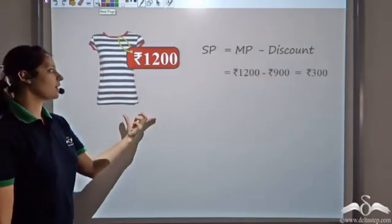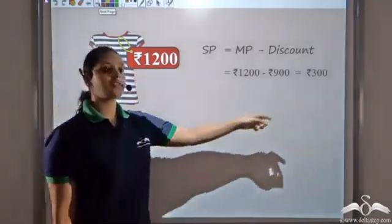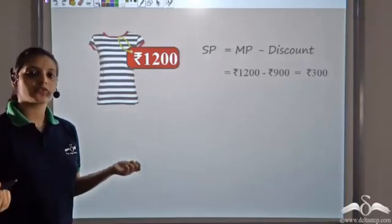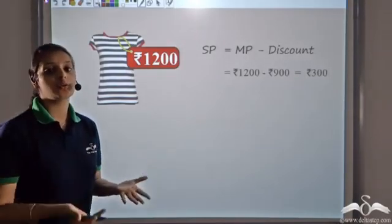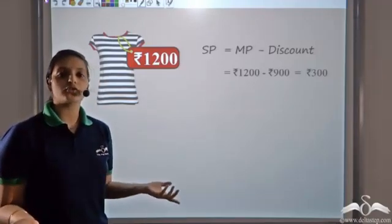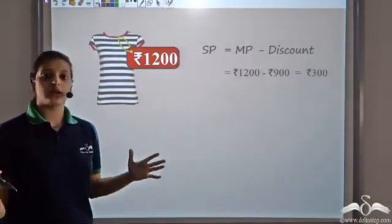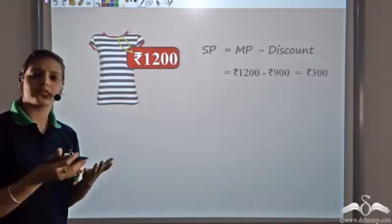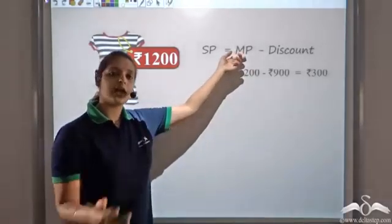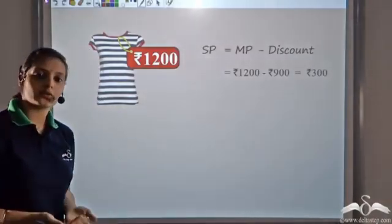The customer takes the t-shirt priced at Rs.1200 for just Rs.300. Now Rajiv is puzzled — customers are taking things at much lower rates; items priced at Rs.900 were being given free of cost. He realizes something is wrong. He cannot give a uniform discount of Rs.900 because all articles have different marked prices.